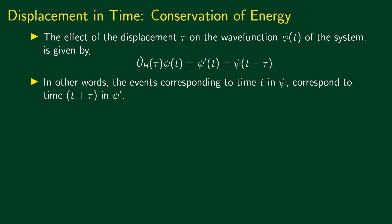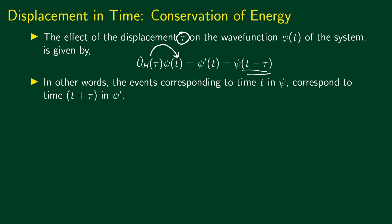Since time translation is a unitary transformation, we can associate a unitary operator to this transformation. The effect of the displacement tau on the wave function psi of t can be written as the unitary operator corresponding to this transformation acting on psi of t, and the transformed wave function psi prime of t has to be equal to psi of t minus tau. So this unitary operator must be such that the unitary transformation of psi of t gives psi of t minus tau.